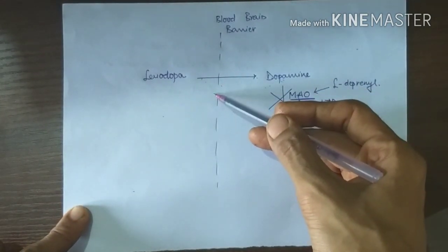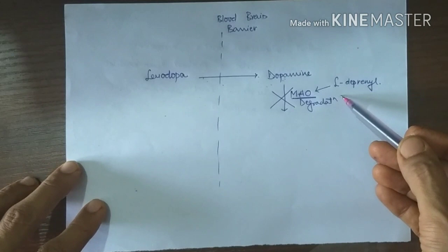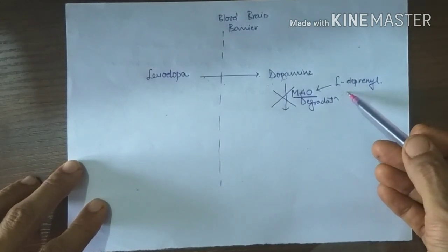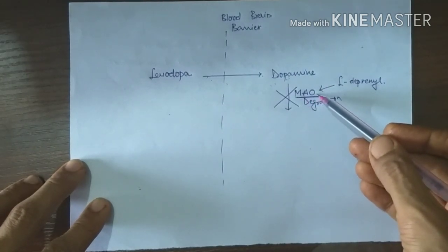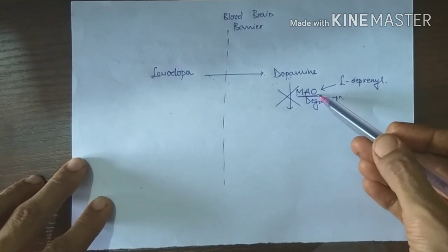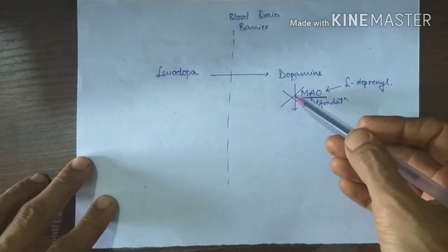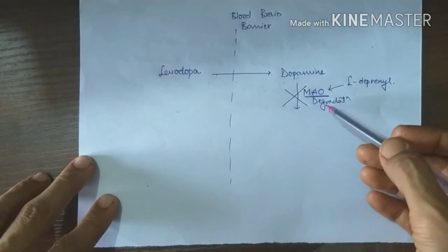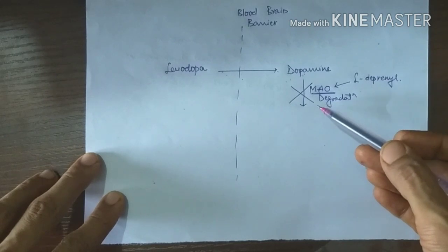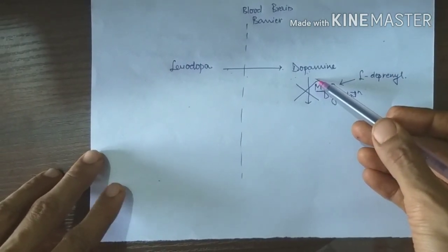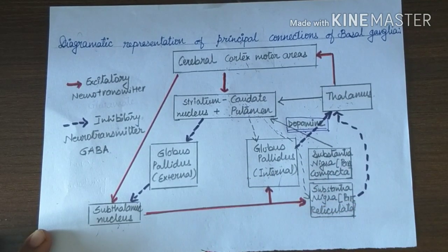Along with levodopa, L-deprenil is given. What is the mechanism? Why do we require L-deprenil? Because L-deprenil is an inhibitor of monoamine oxidase. This monoamine oxidase causes destruction of dopamine. So L-deprenil prevents destruction of dopamine inside the basal ganglia by the enzyme monoamine oxidase, and therefore the action of dopamine is longer.